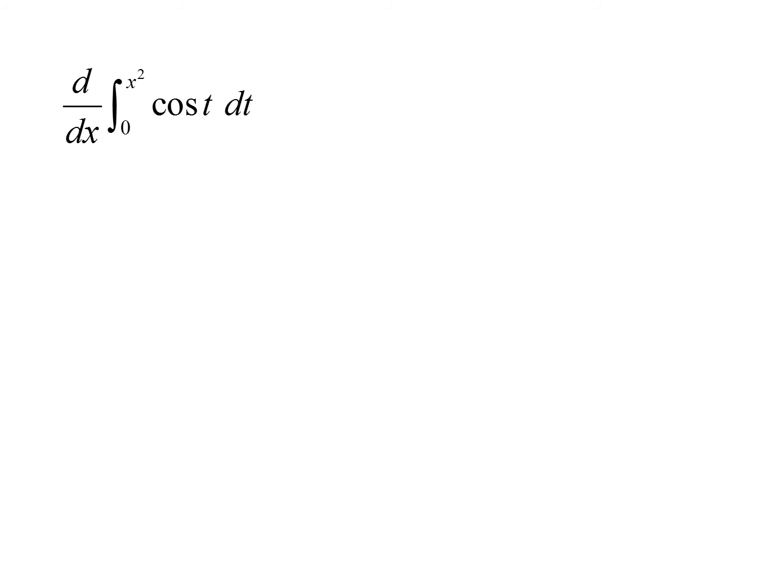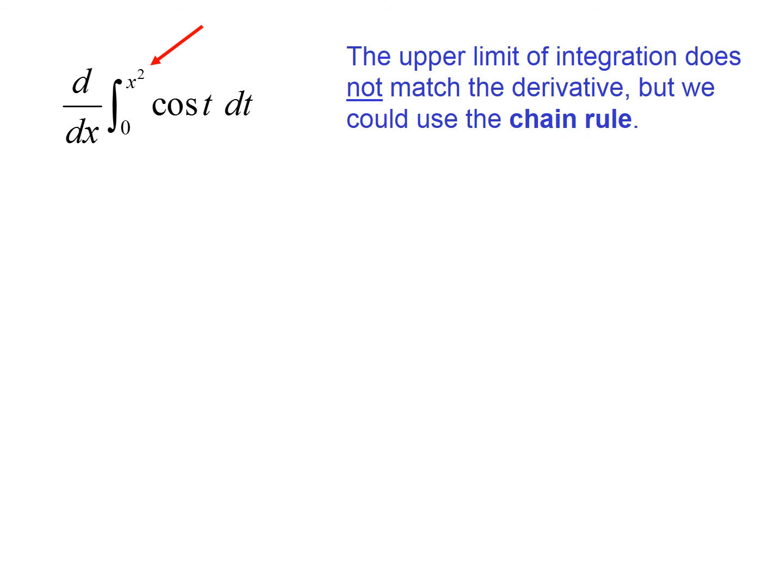Now this one is a little different. I am taking the derivative of an integral. However, my upper limit is x squared. So I'm going to have to use the chain rule, because my upper limit is not simply x. So I'm going to take the derivative of x squared, which is 2x, and then the derivative of d dx from 0 to x of cosine t normally would have been cosine x. In this case, it's cosine x squared. But then I have to take the derivative of x squared. And that's my final answer.